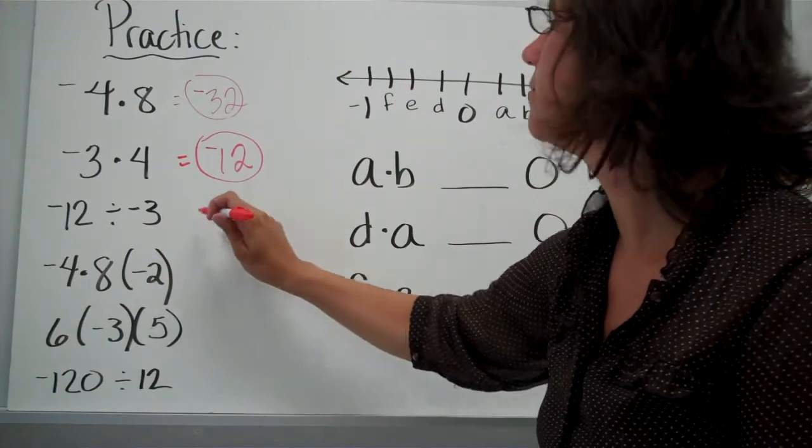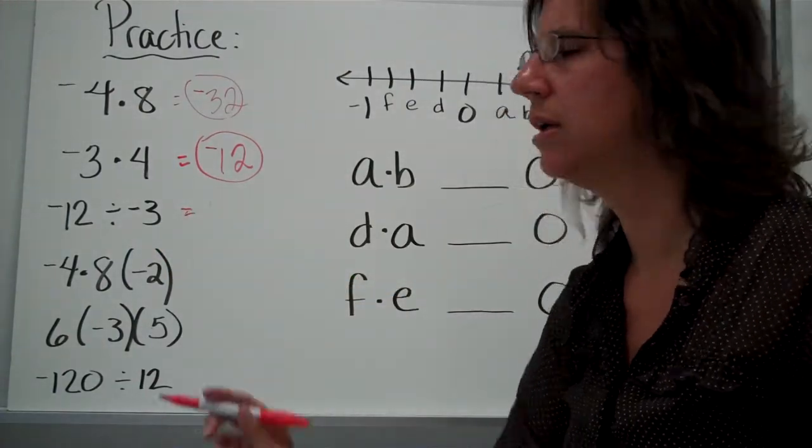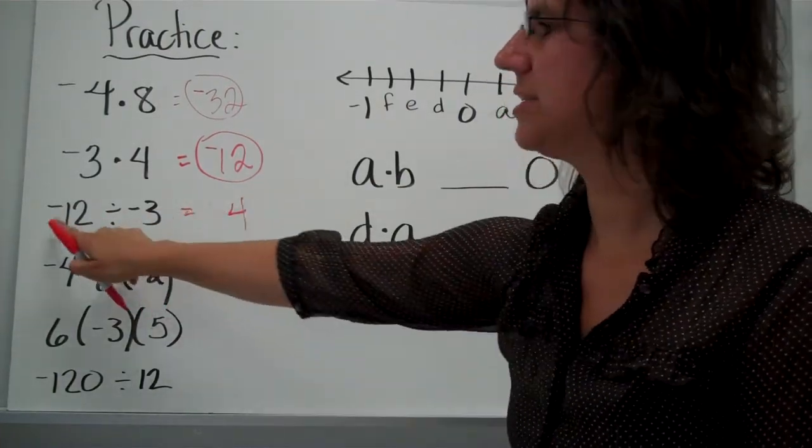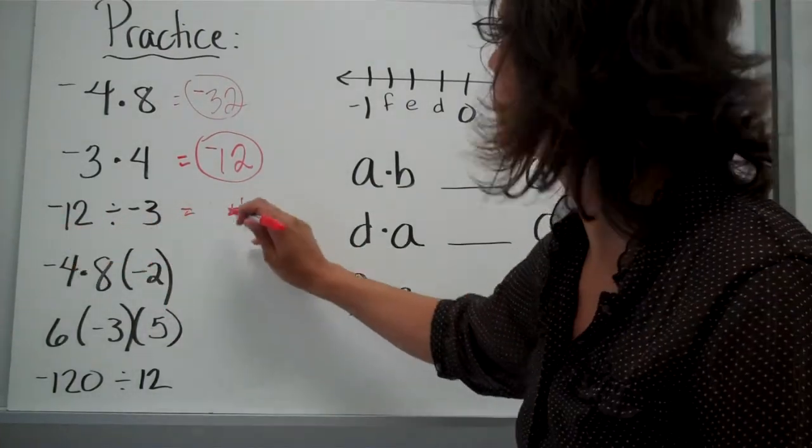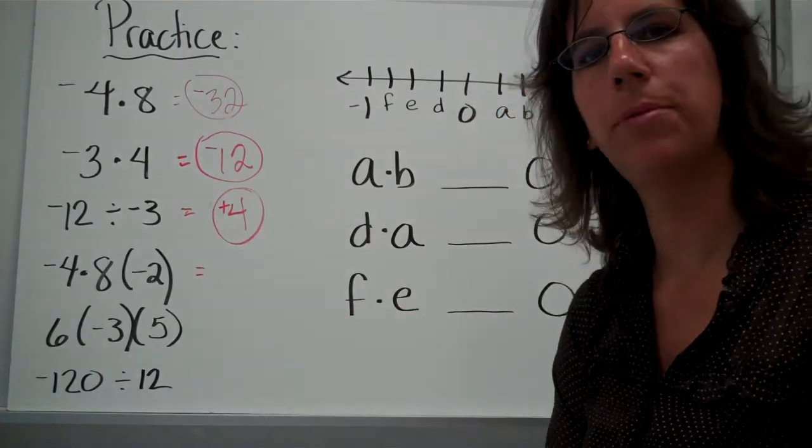12 divided by negative 3. Notice I'm just ignoring the sign. That really doesn't matter until the end. 12 divided by 3 is 4. The signs are the same, so your answer is positive. Alright, let's look at this next one. These are a little bit more challenging.